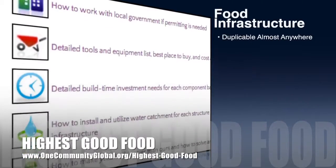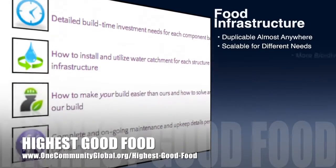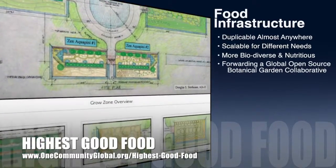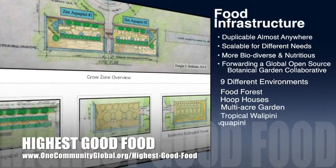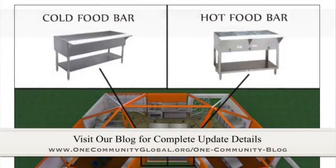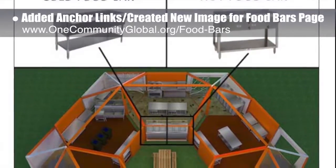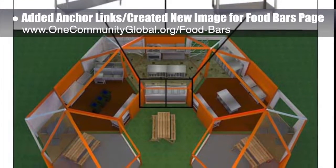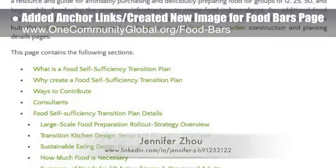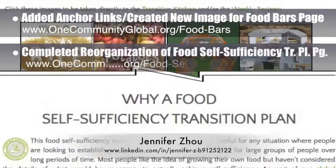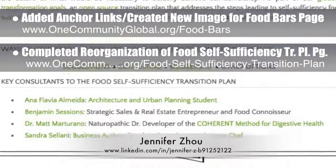One Community's approach to highest good food is duplicable almost anywhere, scalable for different needs, more biodiverse and nutritious, part of forwarding a global open source botanical garden collaborative, and includes 9 different free shared and duplicable growing environments. This week, the core team added anchor links and created a new image for the 'what is' section of the food bars page, bringing it to approximately 20% completion. Working with Jennifer Zhao, web designer, we also completed edits and reorganization of the food self-sufficiency transition plan page, bringing that page to 90% completion.